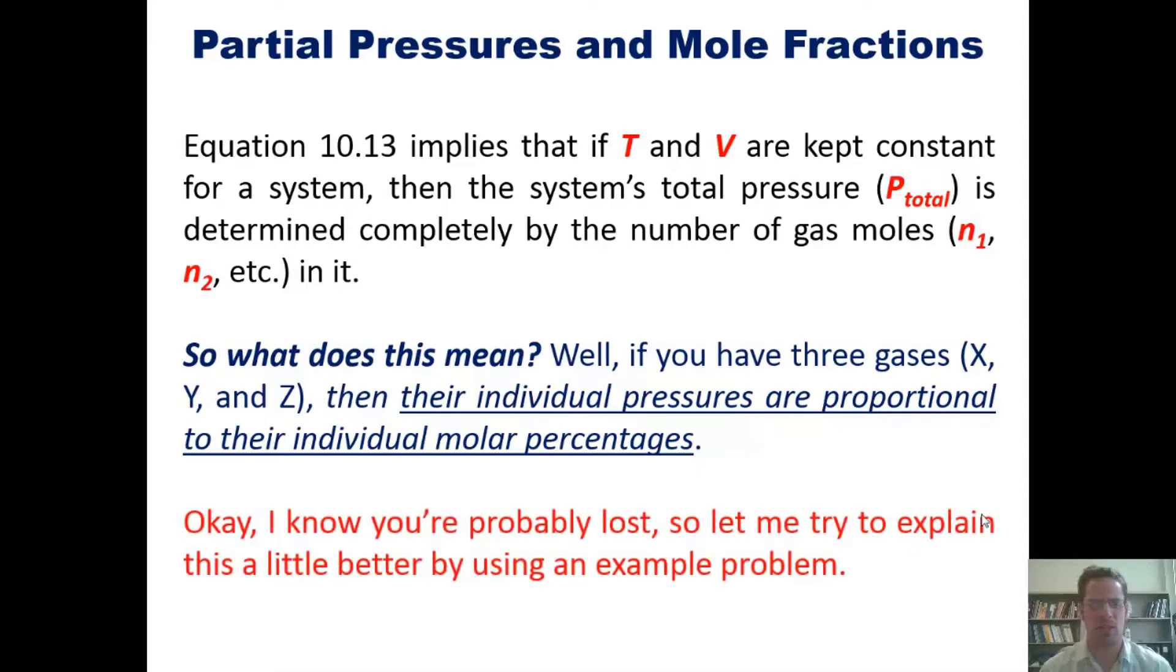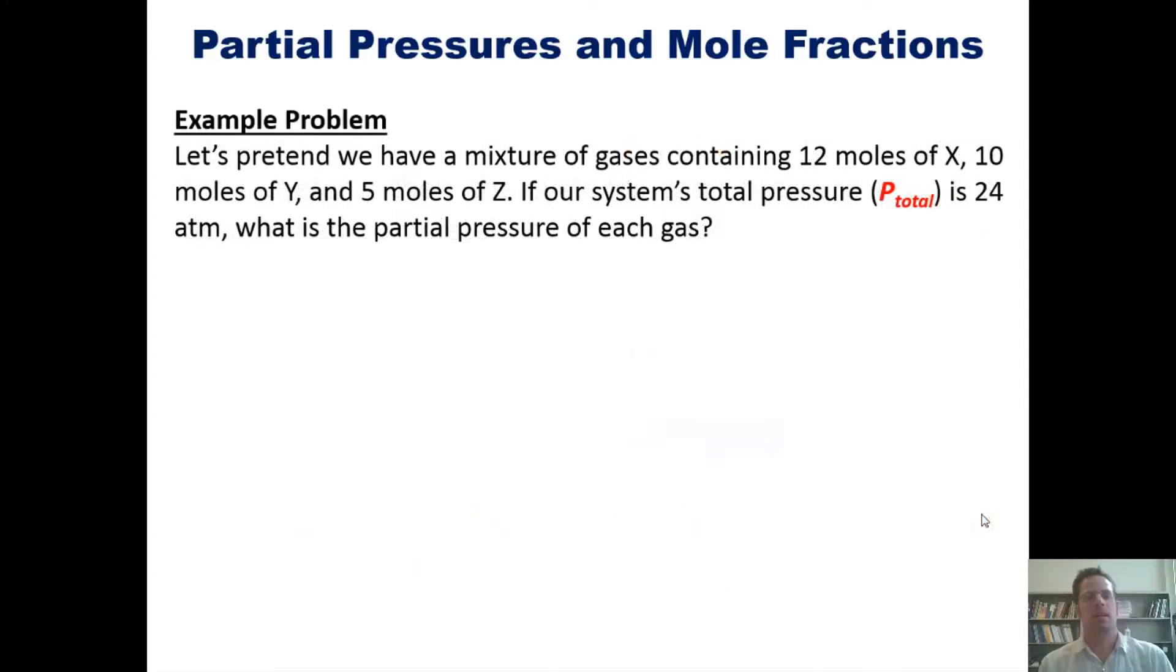I know you're probably a little lost right now, so let me try to explain this a little bit better by using an example problem. Let's pretend that we have a mixture of gases containing 12 moles of X, 10 moles of Y, and 5 moles of Z. If our system's total pressure is 24 atmospheres, what is the partial pressure of each gas?